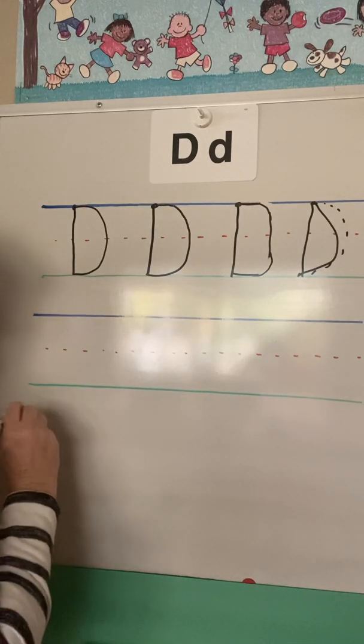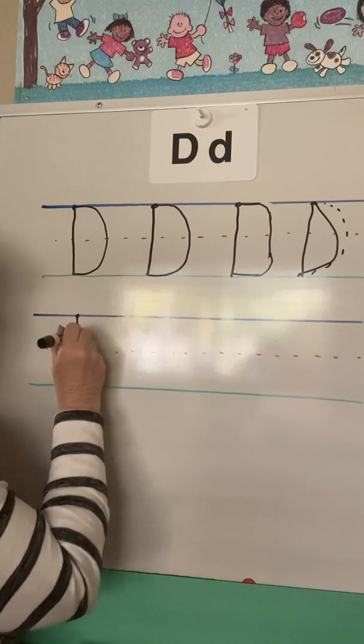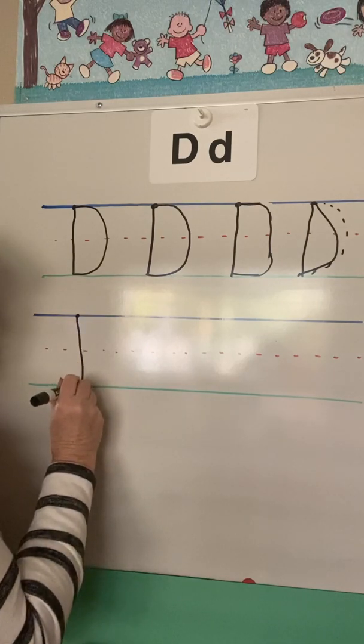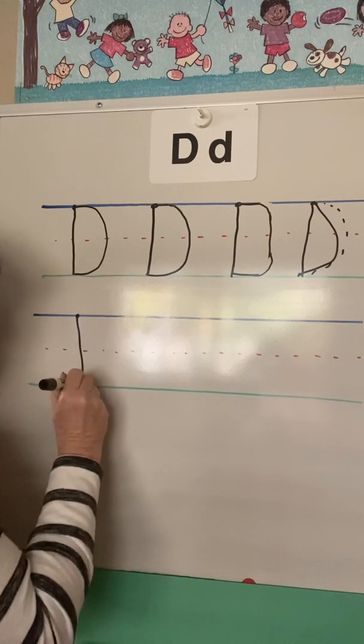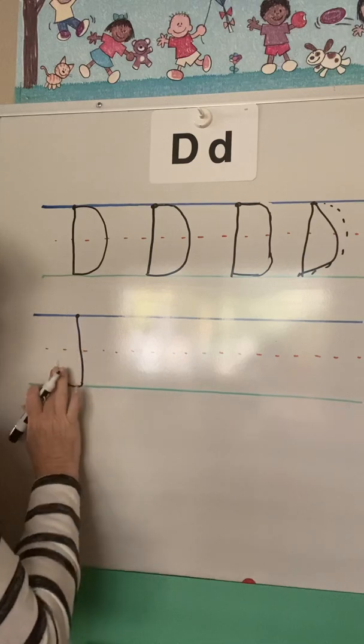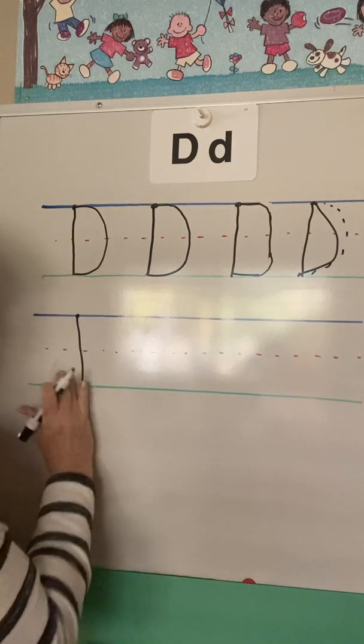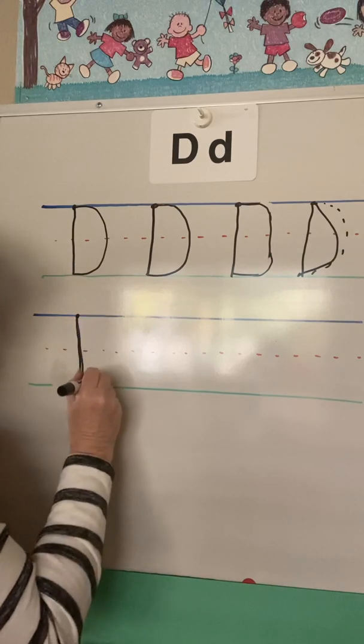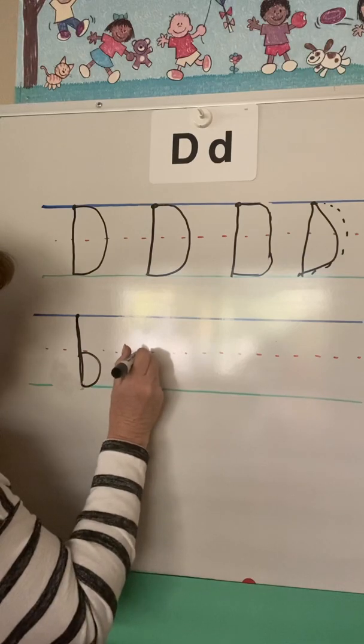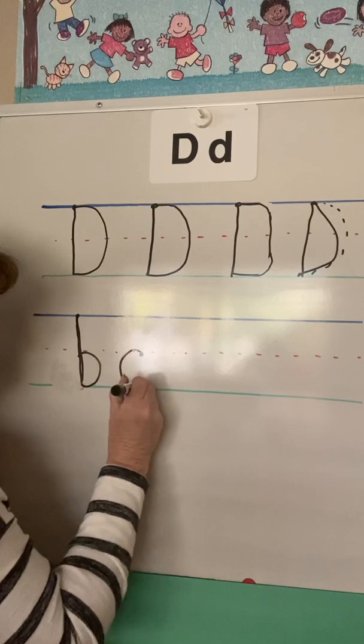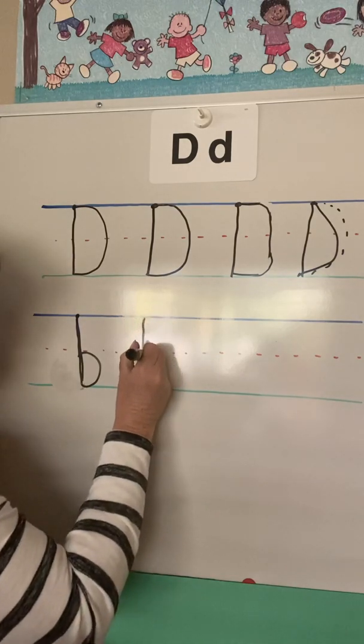So watch now, lowercase d's. The number one thing is do not start from the top. If I start from the top and I go down, then you have to sit there and think, does it go this way? Does it go this way? We make our b's like that. But a d, we're going to do it the other way. We're going to start in the middle and make a magic c first. And then I like to lift up my marker and go up to the top and then go straight through.